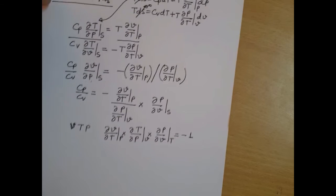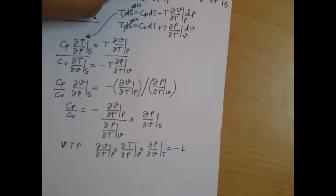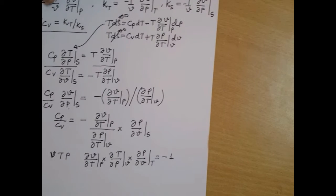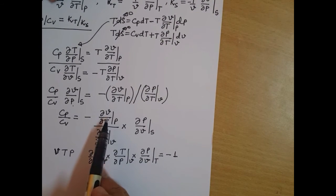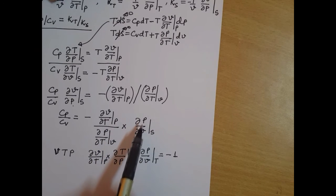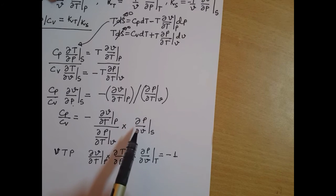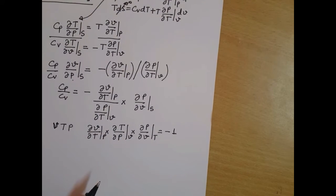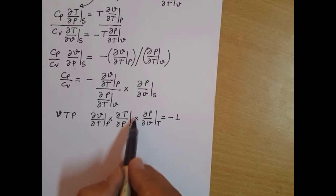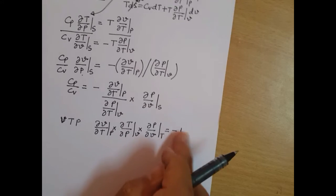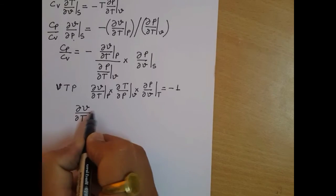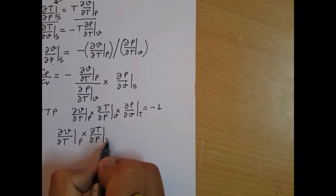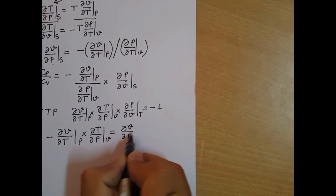We need to prove KT by KS. KT involves del V by del P at constant temperature, and KS involves del V by del P at constant entropy. Looking at our expression, we have del V by del P at constant entropy and its inverse. The next task is to bring del V by del P at constant temperature into the expression. We can write del V by del P at constant temperature as del V by del T at constant pressure times del T by del P at constant volume, with a negative sign.